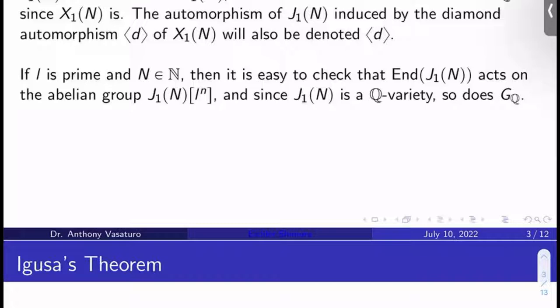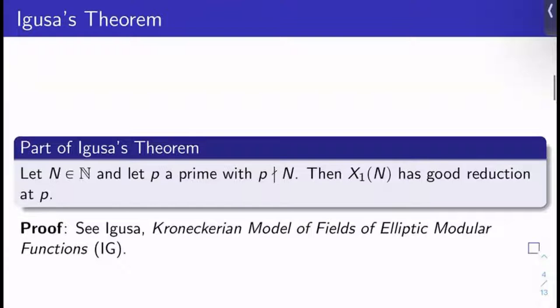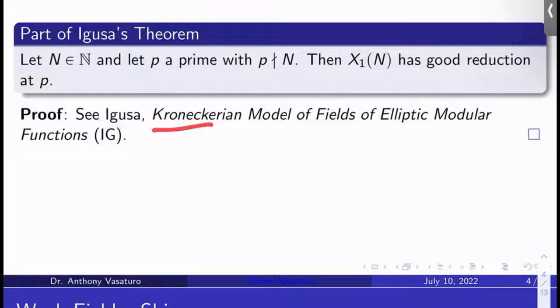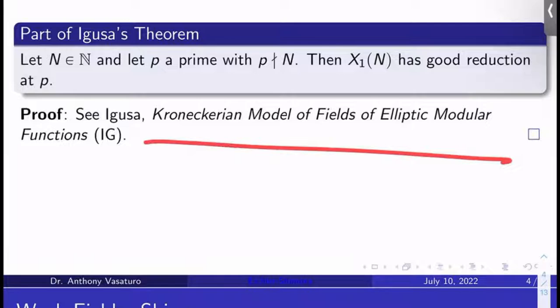So we're going to need to be aware of Igusa's theorem, because this is used throughout the proof of Eichler-Shimura. The relevant part is: let N be a natural number and let p be a prime not dividing N. It turns out then X₁(N) has good reduction at p for all such primes p. I won't go through the proof — I give you a reference here: the Kronecker-Cartan model of fields of elliptic modular functions by Igusa. You do need to also read another paper of Igusa's found in the references of that paper.